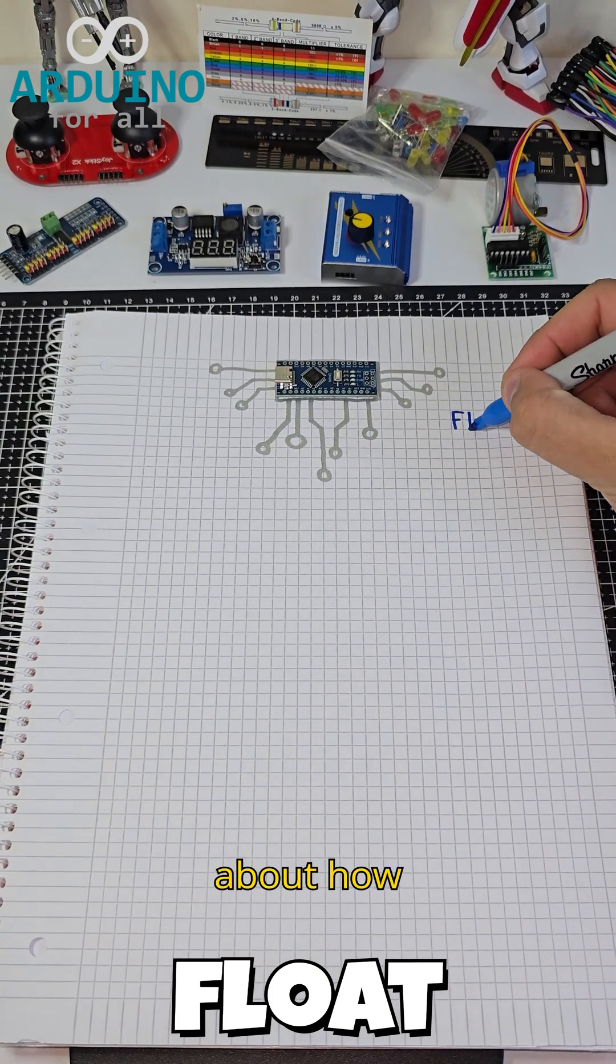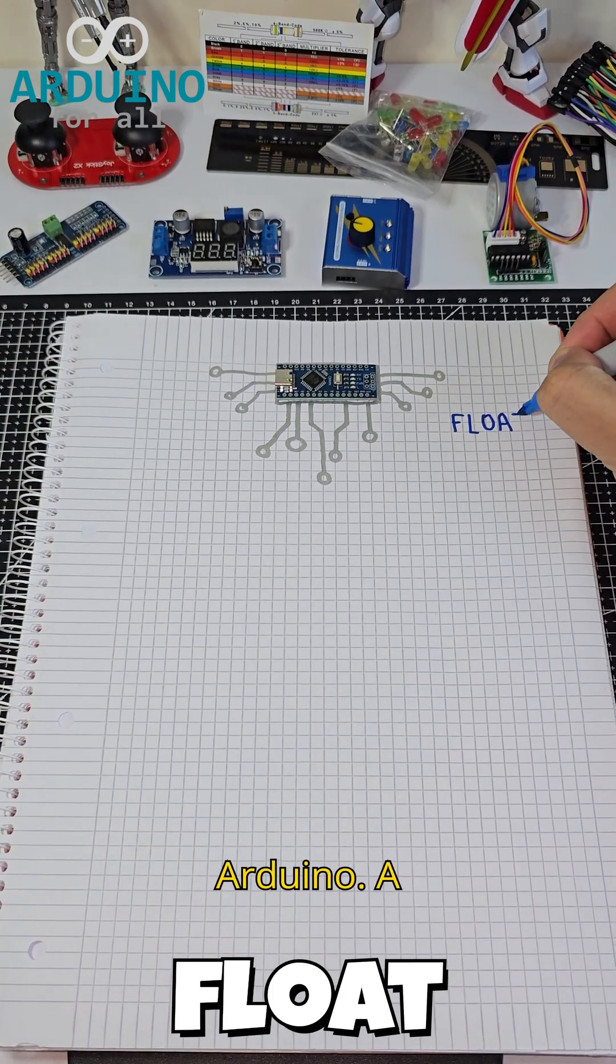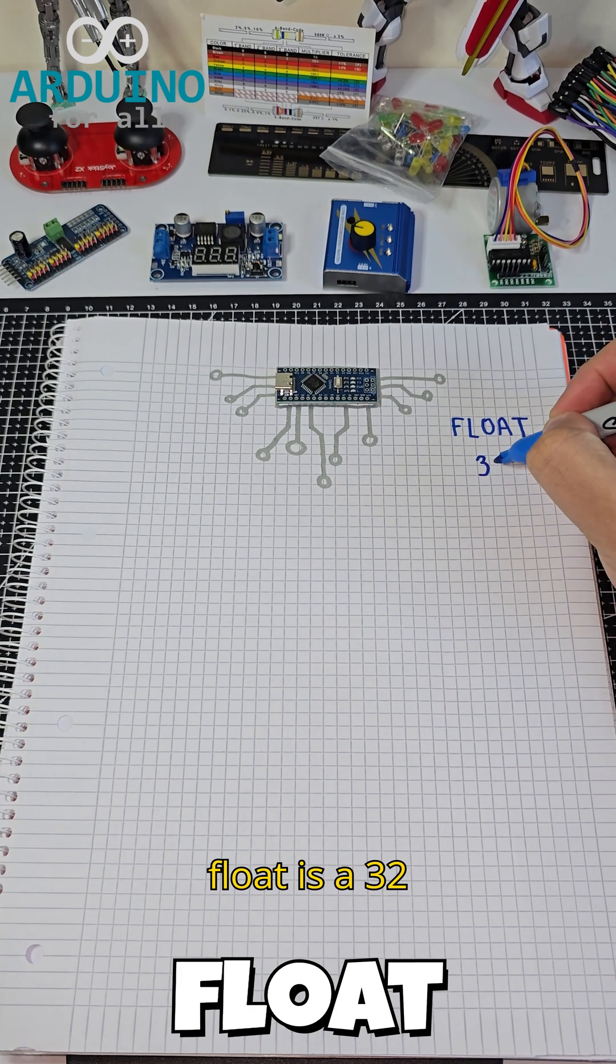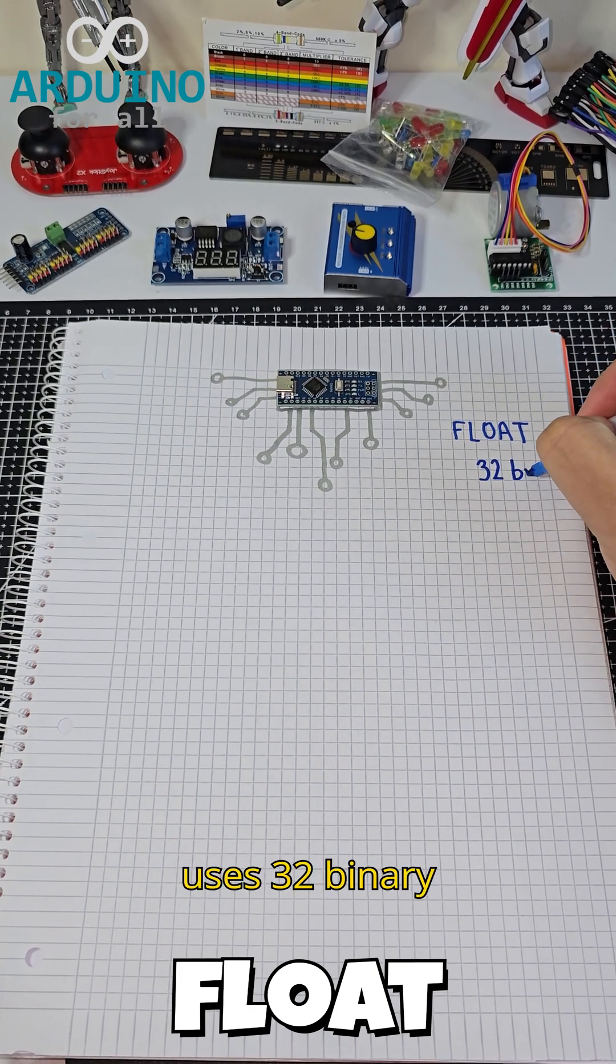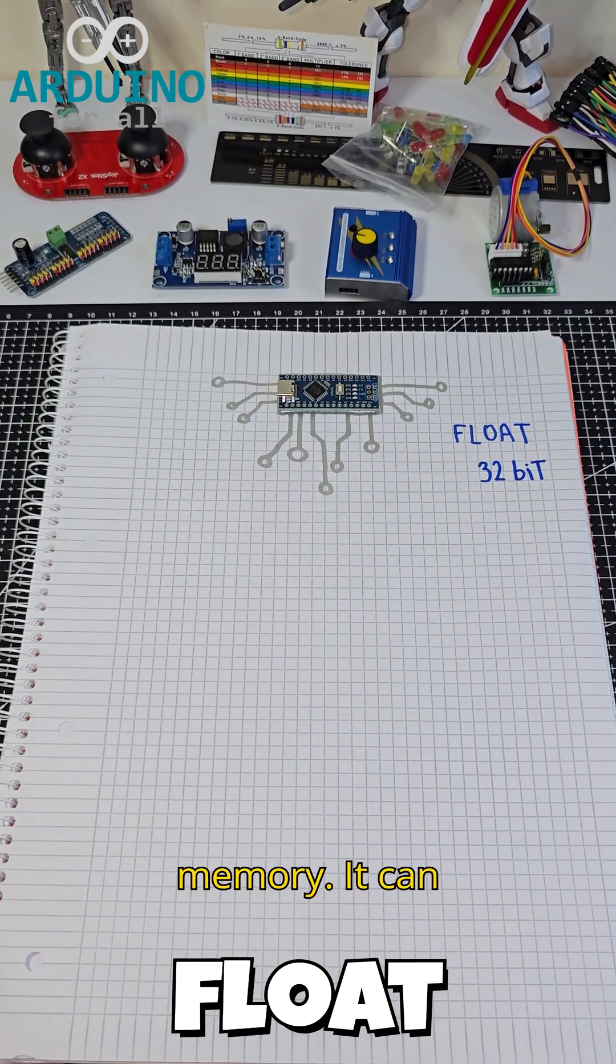Hi there. Let's talk about how float numbers work in Arduino. A float is a 32-bit variable, meaning it uses 32 binary digits in memory.